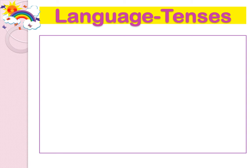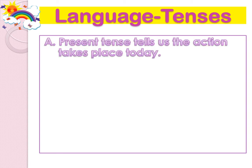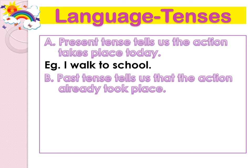Present tense tells us the action takes place today, for example, I walk to school. Past tense tells us that the action already took place, for example, I walked to school.